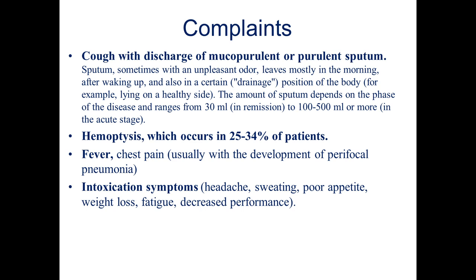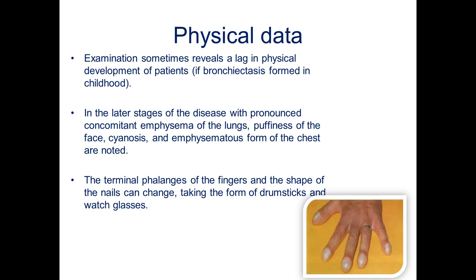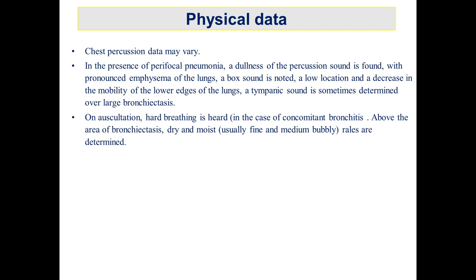Examination sometimes reveals a lack of physical development if bronchiectasis formed in childhood. In later stages of disease, pronounced concomitant emphysema of the lungs, puffiness of face, cyanosis, and emphysematous form of chest are noted. The terminal phalanges of fingers and shape of the nails can change, taking the form of drumsticks and watch glasses — this depends on chronic hypoxia.